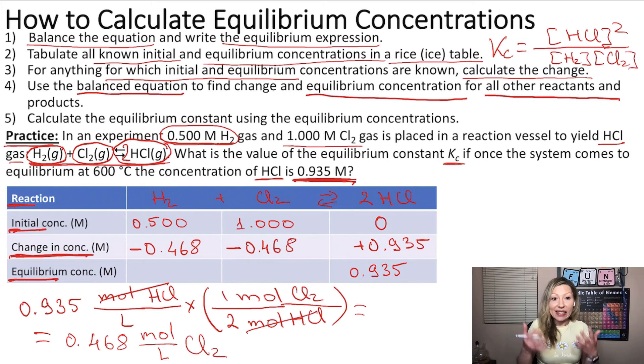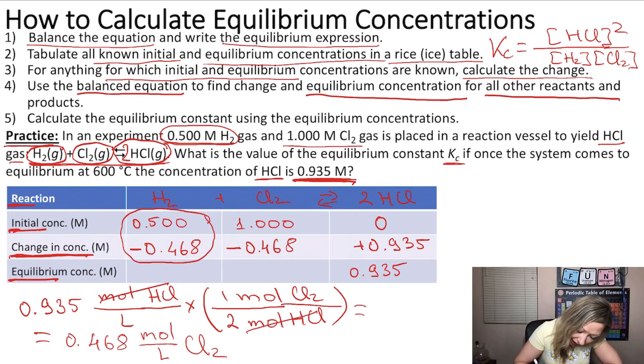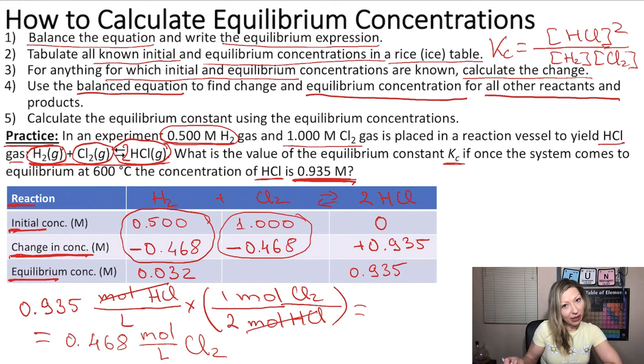And now, if I simply subtract the numbers from each other, I'm going to get the equilibrium concentration. So first, I take 0.5 minus 0.468, and that is going to give me 0.032. This is the equilibrium concentration of H2. And then I subtract from 1 mol per liter, 0.468 mol per liter for Cl2. That is going to give me 0.532 mol per liter.